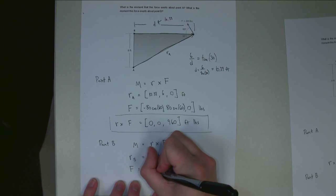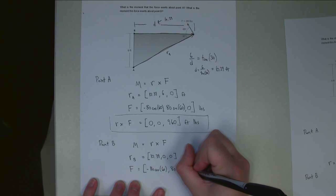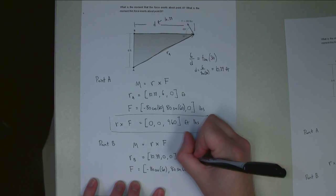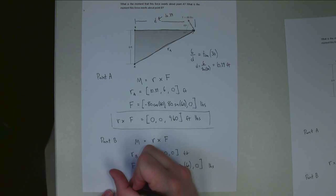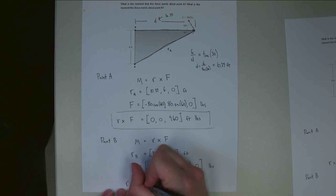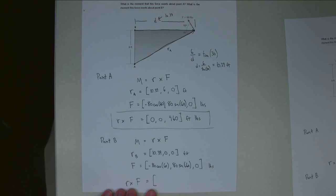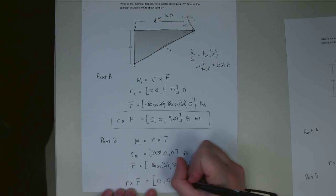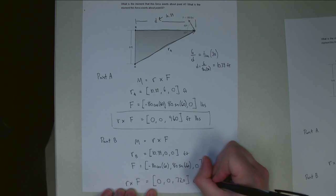So that is negative 80 cosine of 60, 80 sine 60, and 0. So feet, pounds, there's my units. And if I do R cross F, so now I'm doing R B cross the force vector which is the same. Again, if I plug this into something like MATLAB or the Wolfram Alpha online, I can find a result of 0, comma 0, comma 720 foot pounds.